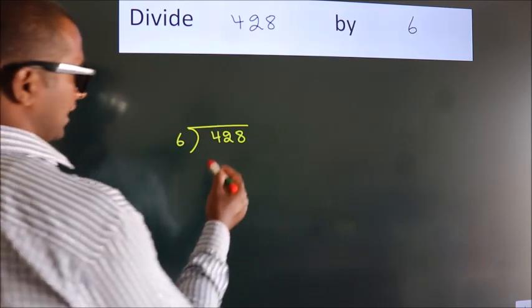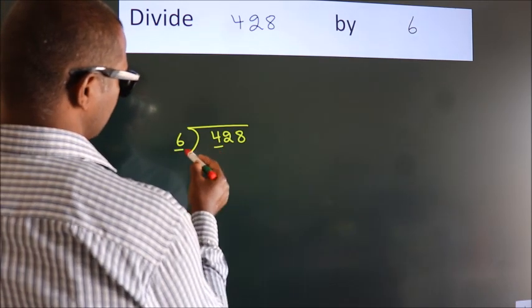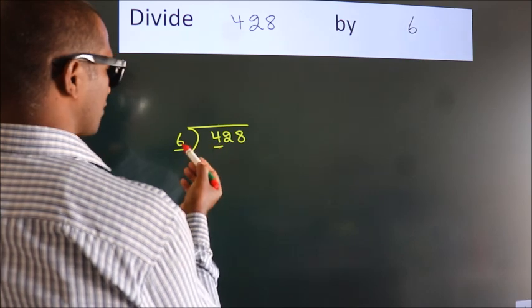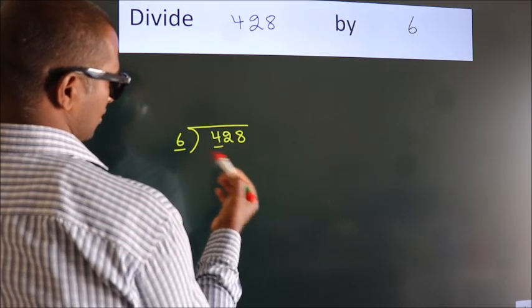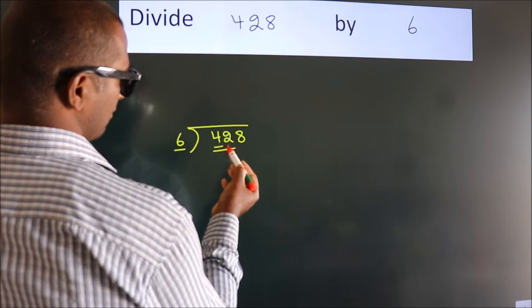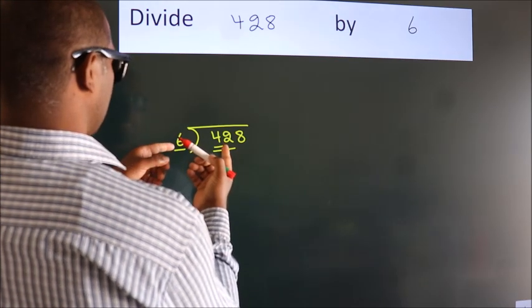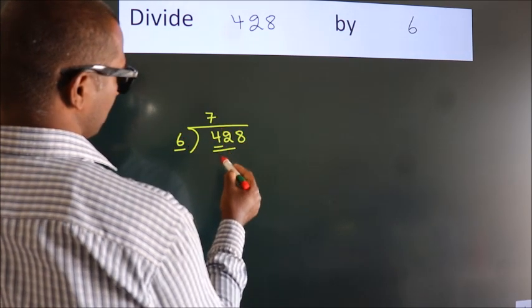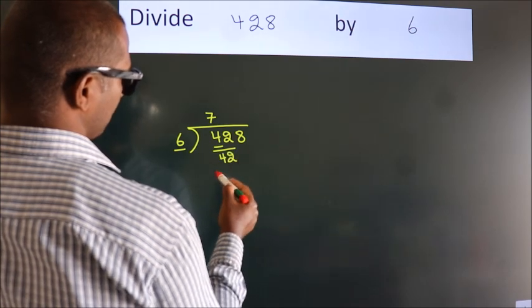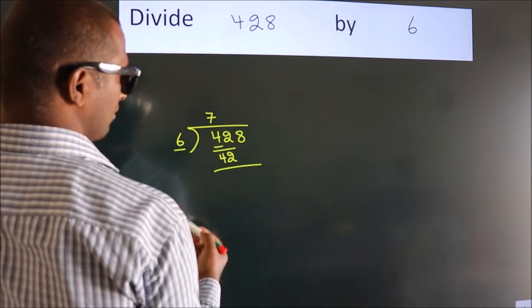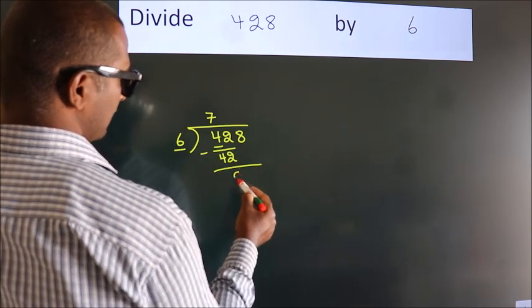Next. Here we have 4, here 6. 4 is smaller than 6, so we should take 2 numbers: 42. When do we get 42? In the 6 table, 6 7s is 42. Now we subtract. We get 0.